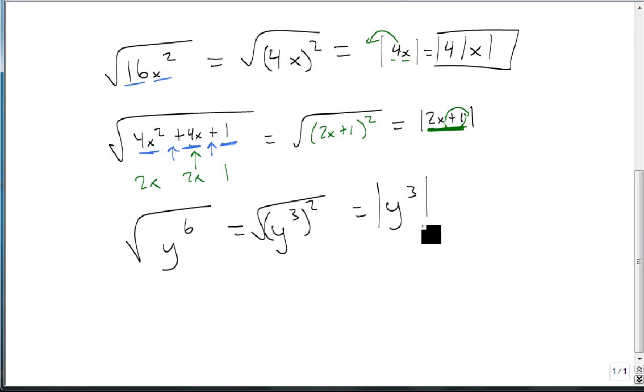And so the entire trick here when you have variables is to accurately and correctly figure out what's been squared, pull it out, and keep the variable and any terms associated with the variable in absolute values.